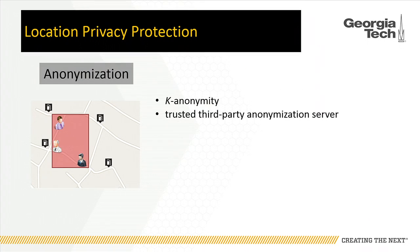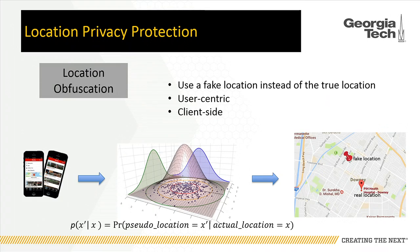To protect our location privacy, you can think of doing anonymization. But it has been shown to be insufficient to protect location privacy, and it often requires a trusted third-party anonymization server in current architecture. Another approach is location obfuscation — it simply uses a fake location to replace the true location.